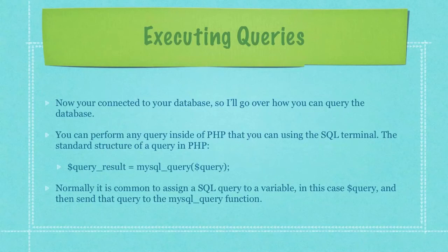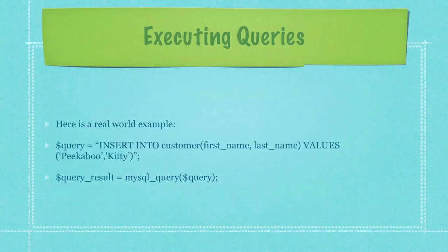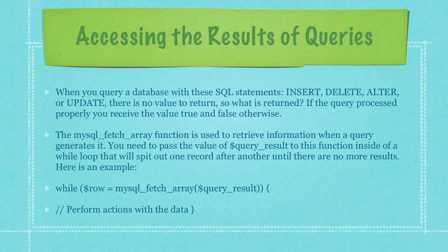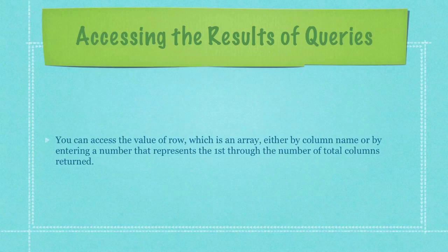Here is a real-world example. I'm performing an INSERT INTO the table named customer and assigning the values 'peekaboo' and 'giddy' to the columns first name and last name. When you query a database with SQL statements like INSERT, DELETE, ALTER, or UPDATE, there is no value to return. What is returned is the value true if the query processed properly, and false otherwise. The mysql_fetch_array function is used to retrieve information when a query generates results. You pass the query result to this function inside of a while loop that will spit out one record after another until there are no more results. You can access the value of row — which is an array — either by column name or by entering a number representing the column index.